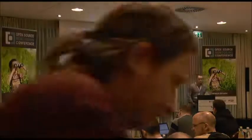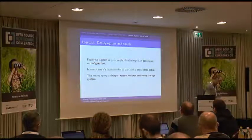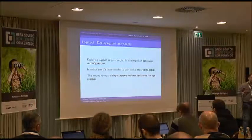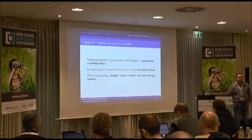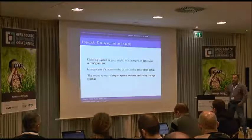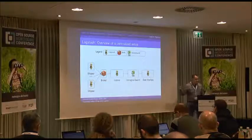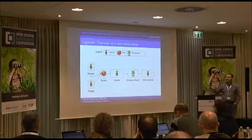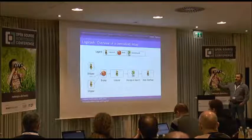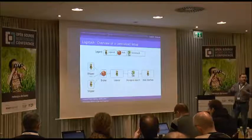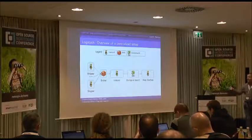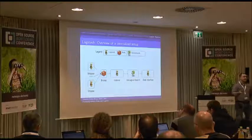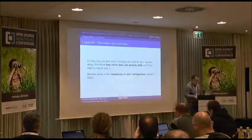In most cases, people recommend a centralized setup: a shipper, a queue, an indexer, and some storage. You could skip some parts — for example, skip the queue and just have a shipper and storage. This overview is taken from the Logstash website. You have those shippers which are agents, a broker which is the queue, the indexer which mangles the logs, storage which could be Elasticsearch, and the web interface which is Kibana. That's why people use this ELK stack.